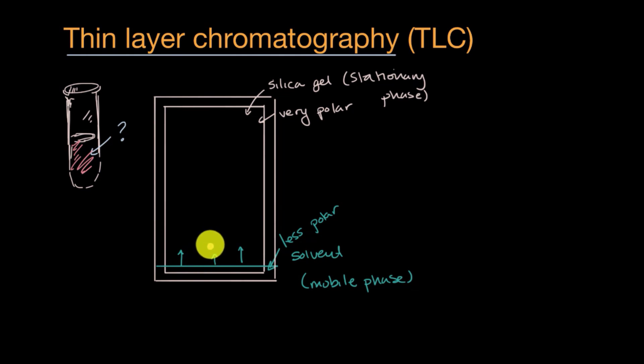It's trying to pick up some of this mystery substance and transport it. Let's say this mystery substance is made up of two different things. If something is more polar, that means it's going to be more attracted to the stationary phase, which is very polar, and so it's not going to travel that far. While the parts of our mystery substance that are less polar, they're not going to be attracted to the silica gel as much, so they're going to travel further with the solvent.